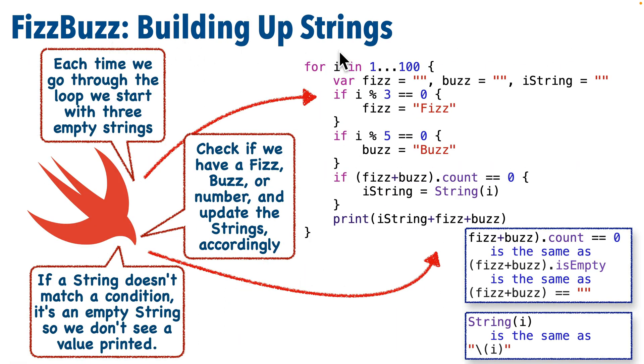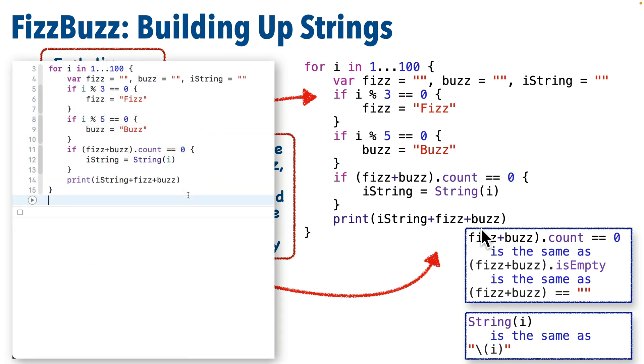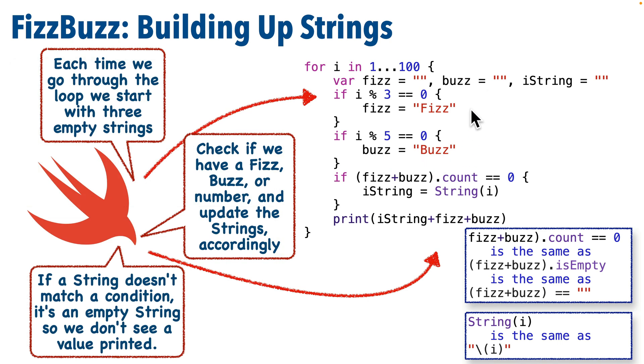Now here's another approach. In this approach we always print 3 strings, but we start out setting each of the 3 strings to the empty string. Now if 3 divides evenly into i, then we change the first string to Fizz. If 5 divides evenly into i, we change the second string into Buzz. But if we have empty strings for Fizz and Buzz, then we just print i. But since we want to print a string, and i is an integer, we need to convert i to a string. Also down here I show multiple ways we can find out if Fizz plus Buzz are empty strings. And down here I show two different ways to convert the integer i into a string.